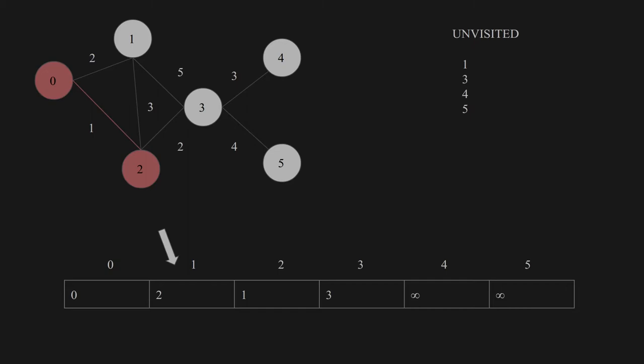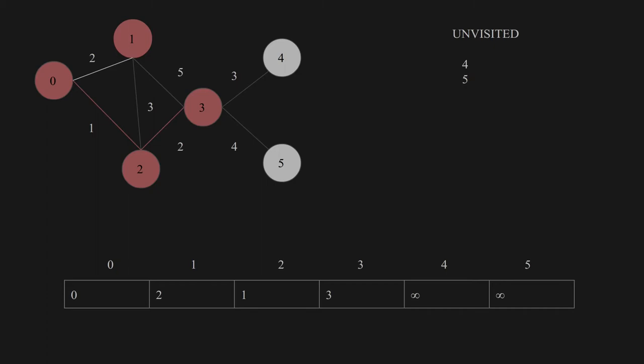Now house 1 has the smallest distance among the unvisited ones, so we move there. The neighboring houses of house 1 are house 2 and house 3. For house 2 the new distance would be 2 + 3 = 5, which is bigger than the existing one. For house 3 it is 2 + 5 = 7, which is also bigger than the existing 3. So we make no change.